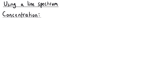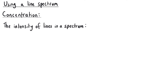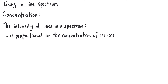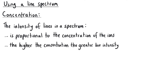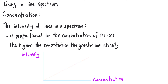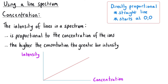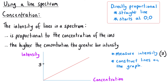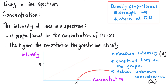The second way to use a line spectrum is quantitatively — using numbers to calculate the concentration of metal ions present in a sample. This works because the intensity of the lines in a line spectrum is proportional to the concentration of the ions: the higher the concentration of the metal ion in solution, the greater the line intensity. This can be shown graphically as a straight-line graph starting at the origin, showing intensity is directly proportional to concentration, allowing us to read off the concentration of an unknown solution from its measured intensity.